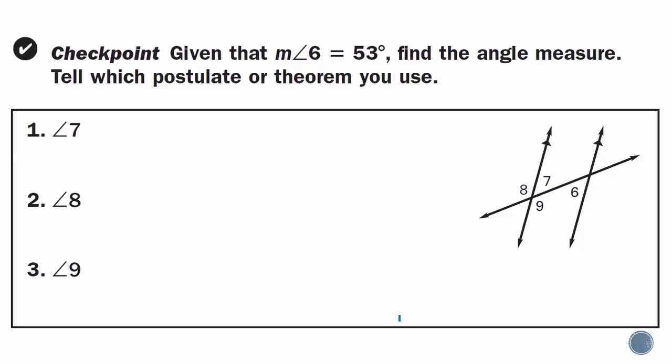Checkpoint problems 1, 2, and 3 are yours. Given that the measure of angle 6 is equal to 53 degrees, find the angle measures and tell which postulate or theorem you use. In problem 1, find the measure of angle 7. In problem 2, find the measure of angle 8. In problem 3, find the measure of angle 9. For each problem, tell which postulate or theorem you used.